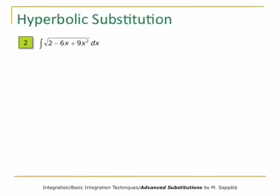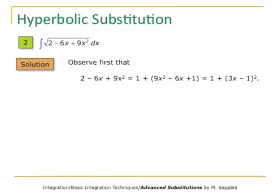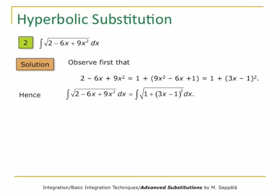To compute the integral of √(2 − 6x + 9x²) dx, we first complete the expression under the square root to a perfect square. We observe that 2 − 6x + 9x² equals 1 + (9x² − 6x + 1). Now, 9x² − 6x + 1 = (3x−1)². So the expression under the square root is 1 + (3x−1)². Hence, the integral equals the integral of √(1 + (3x−1)²) dx.